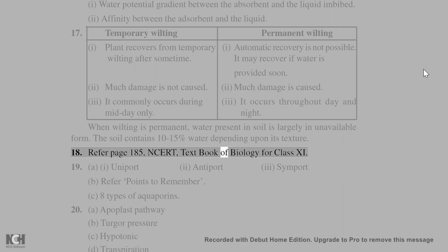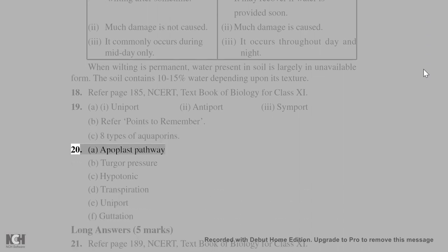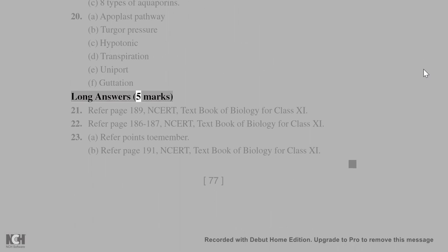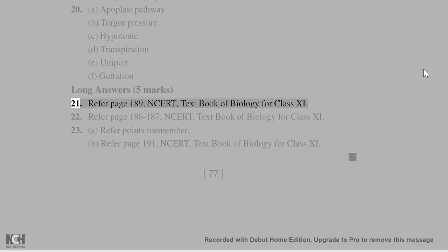18. Refer page 185, insert, textbook of biology for class 11. 19. A. 1. Uniport. 2. Antiport. 3. Symport. B. Refer points to remember. C. Types of aquaporins. 20. A. Apoplast pathway. B. Turgor pressure. C. Hypotonic. D. Transpiration. E. Uniport. F. Guttation. Long Answers, 5 Marks. 21. Refer page 189, insert, textbook of biology for class 11.